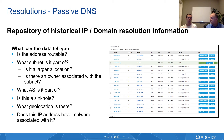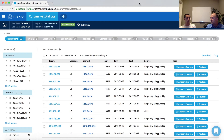By default, when you run a query inside of community.riskiq.com, we're actually going to select the resolutions tab. What that is is our passive DNS A record information. Passive DNS is essentially a repository of historical IP to domain lookups.